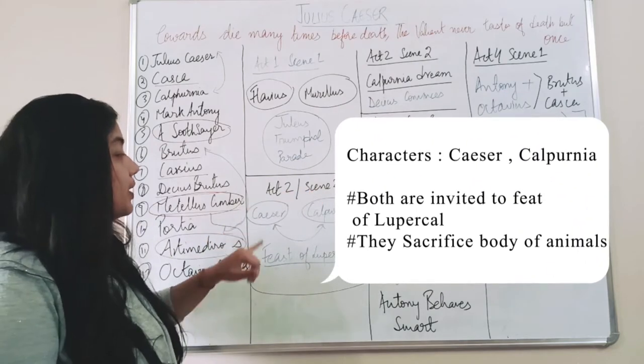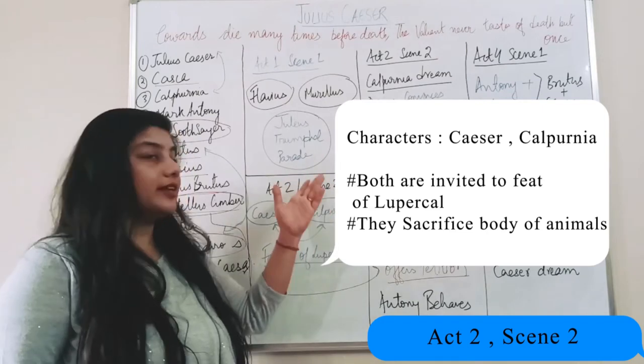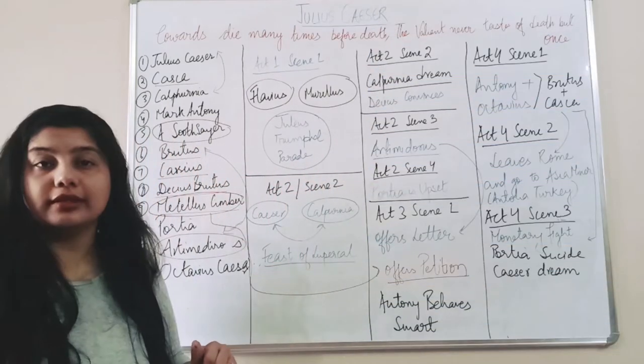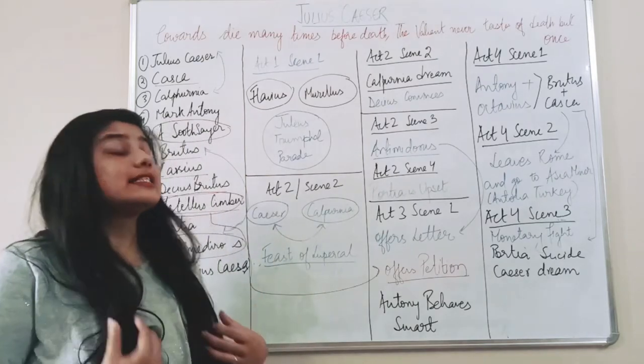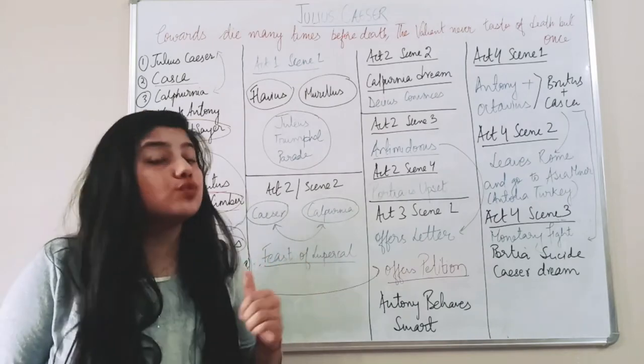Act 1 Scene 2. Now Caesar and Calpurnia are enjoying their victory and they have been just invited to the feast of Lupercal. It is actually a feast. Now we celebrate Diwali, Holi, there are so many events and occasions. Similarly there they celebrate this feast of Lupercal.